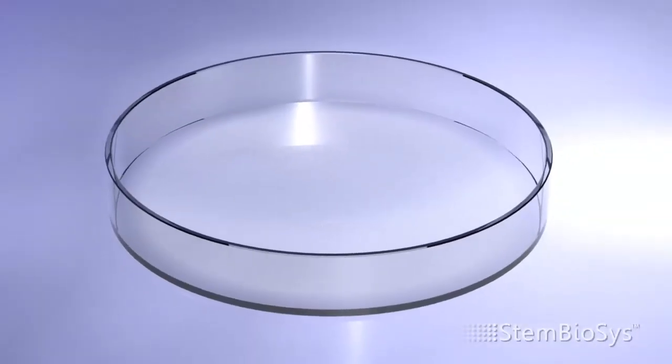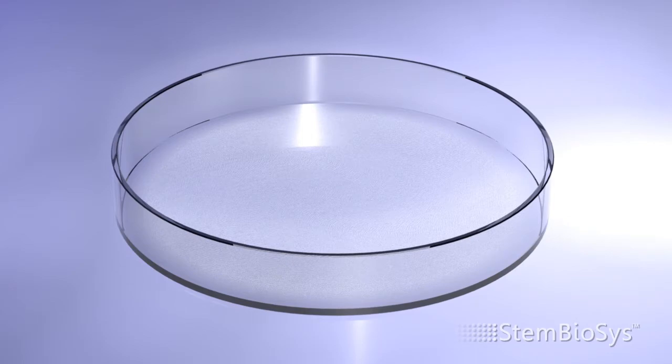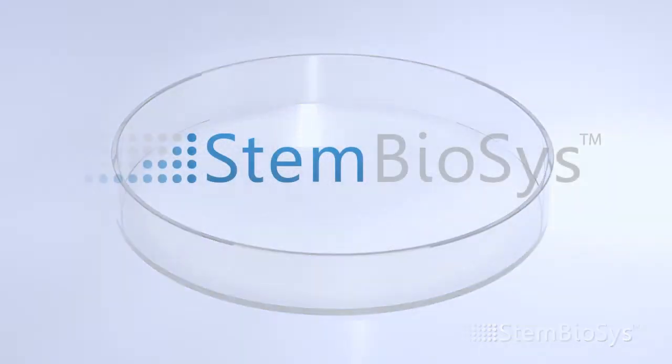The matrix is then thoroughly washed, the remaining solutions are removed, and the dishes or vessels dried, leaving on the surface of the cell culture substrate a native, three-dimensional home for stem cell proliferation similar to that from which they came.